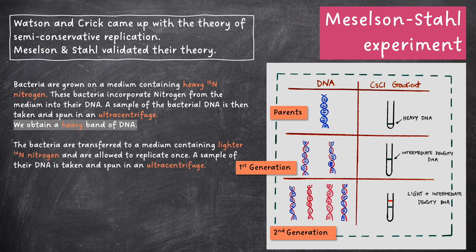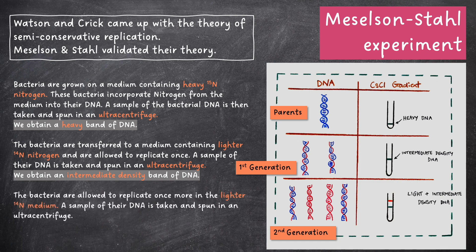Next, bacteria are transferred to a medium containing lighter 14N nitrogen and are allowed to replicate once. A sample of their DNA is taken and spun in an ultracentrifuge, and we obtain an intermediate density band of DNA. Finally, the bacteria are allowed to replicate once more in the lighter 14N medium. A sample of their DNA is taken and spun in an ultracentrifuge. This time, we obtain bands of both light and intermediate density DNA.